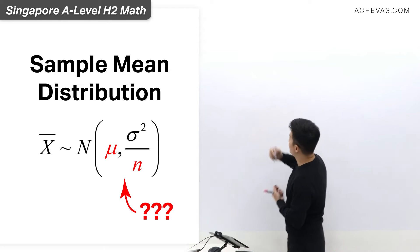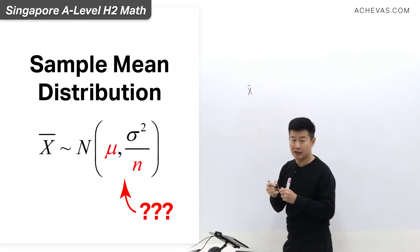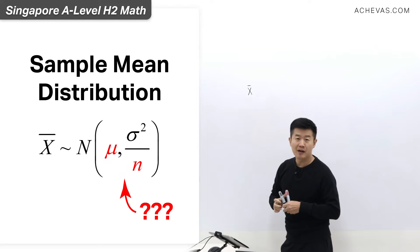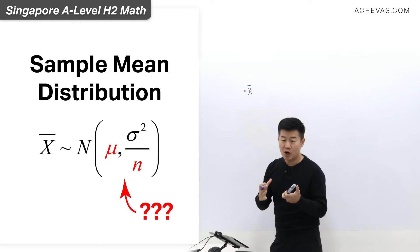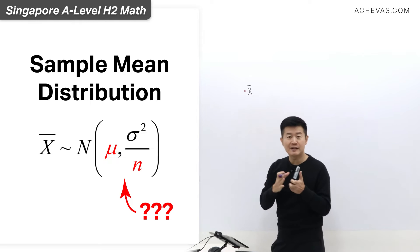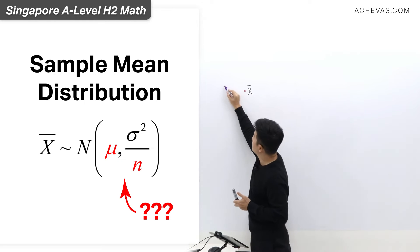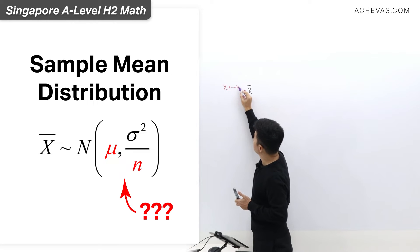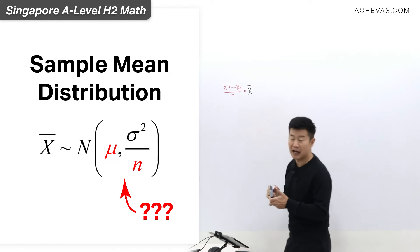First of all, we have to understand what exactly x-bar is representing. x-bar represents the mean of n different samples of x. That means x-bar is simply x1 plus x2 plus x3 all the way until xn, divided by n.